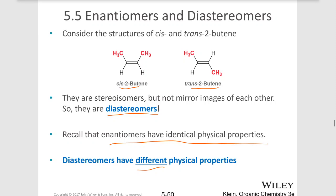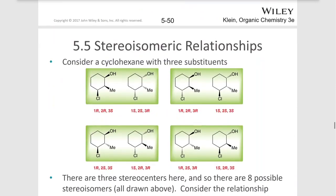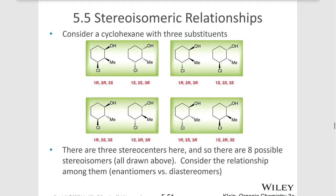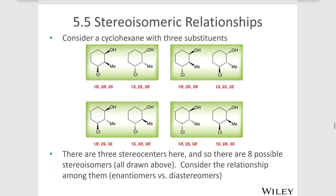Enantiomers can't be separated by simple techniques. Let's consider where we might see a diastereomer on an sp3 hybridized stereocenter. Consider a cyclohexane derivative with three substituents: an OH, a methyl, and a chlorine. We could have potentially eight different configurations for this molecule.